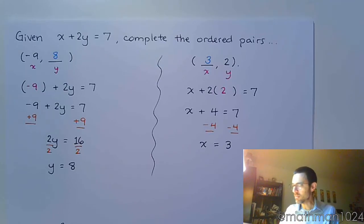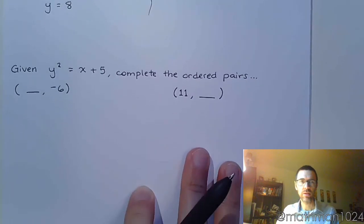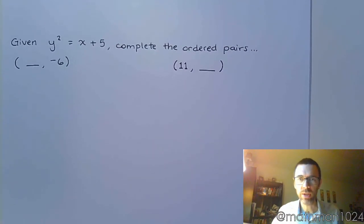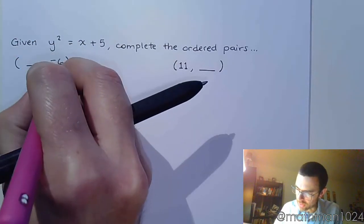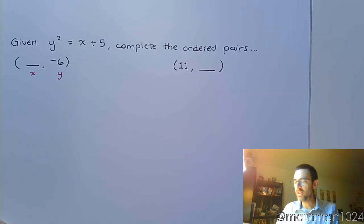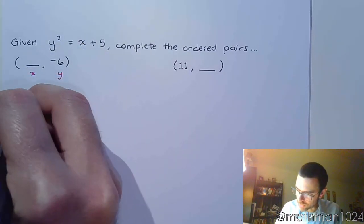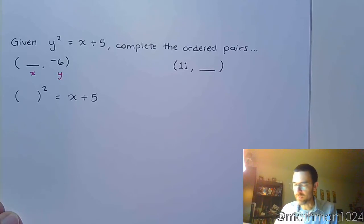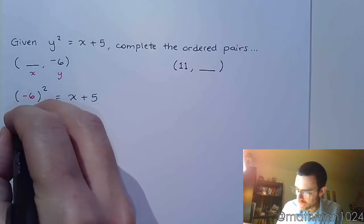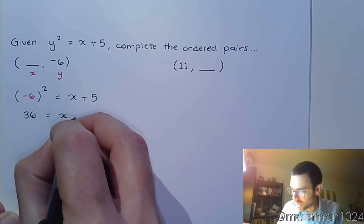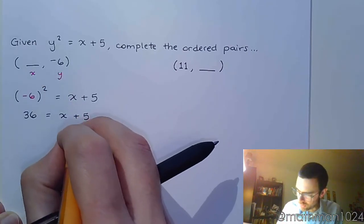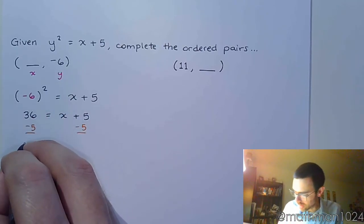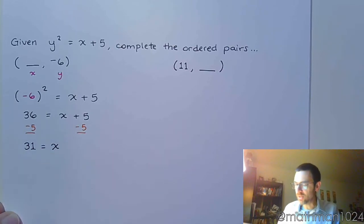Let's go to another example. Here we have y squared equals x plus 5, and we want to complete the ordered pair. We're given that y equals negative 6, so we plug that in: parentheses squared for y equals x plus 5, giving us negative 6 squared. So 36 is equal to x plus 5. Subtracting 5 from both sides means that x is equal to 31, and that completes the ordered pair.